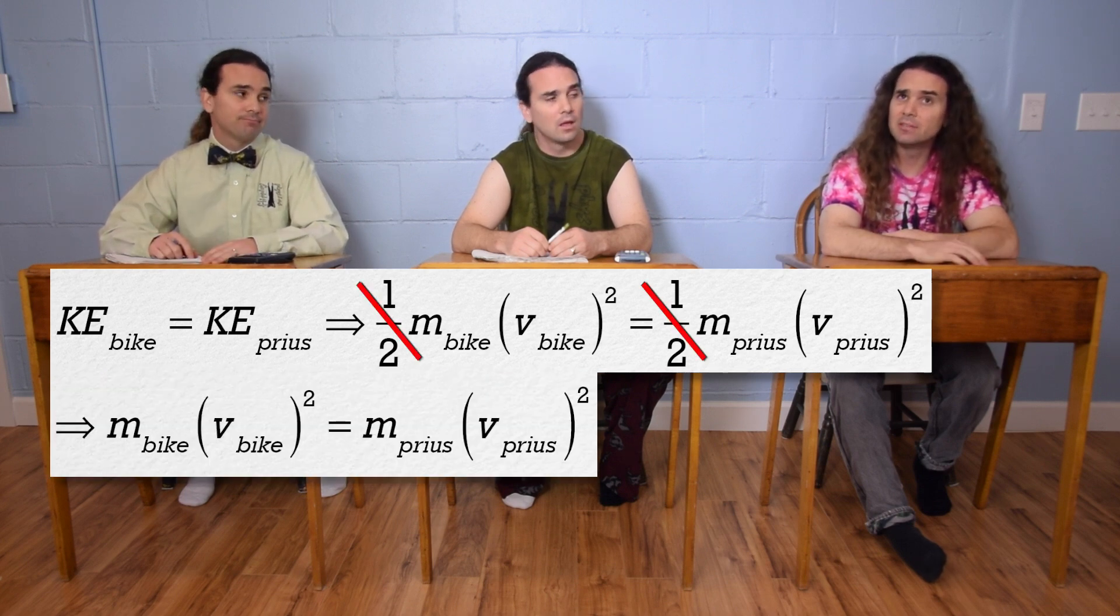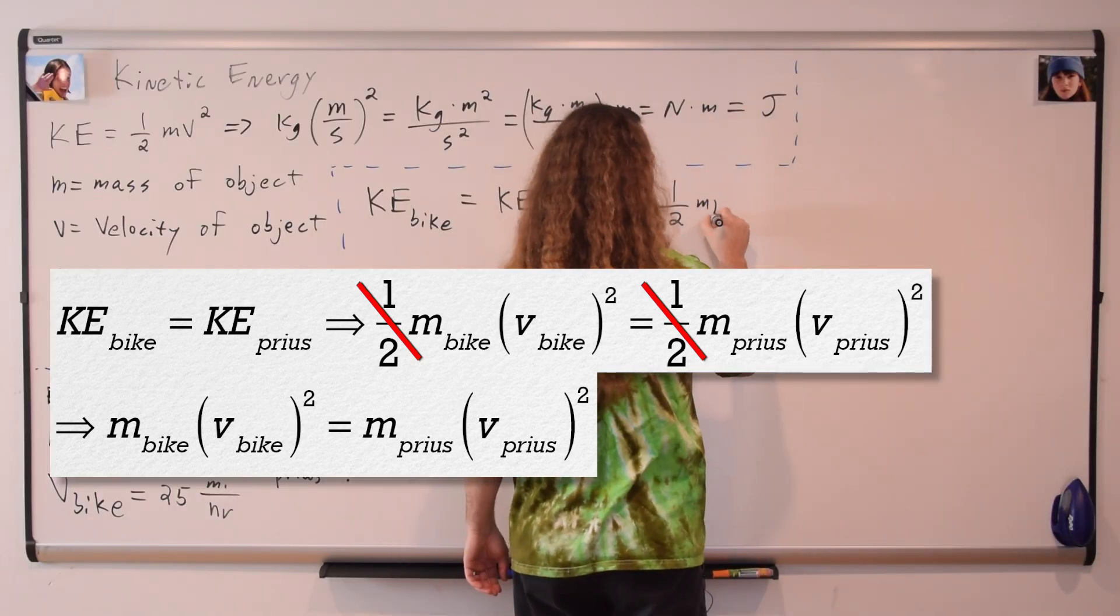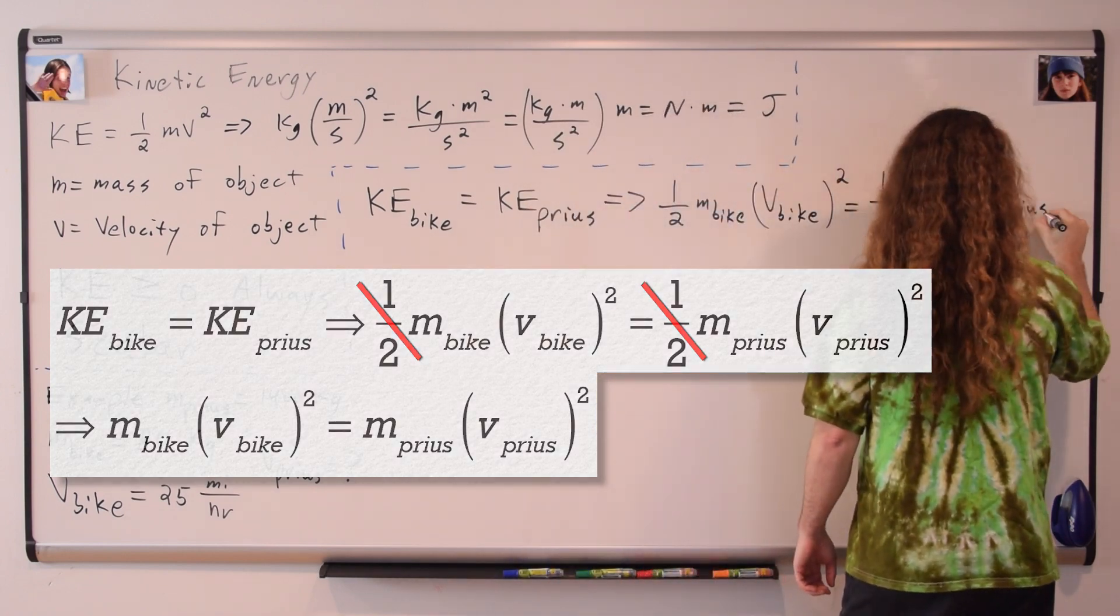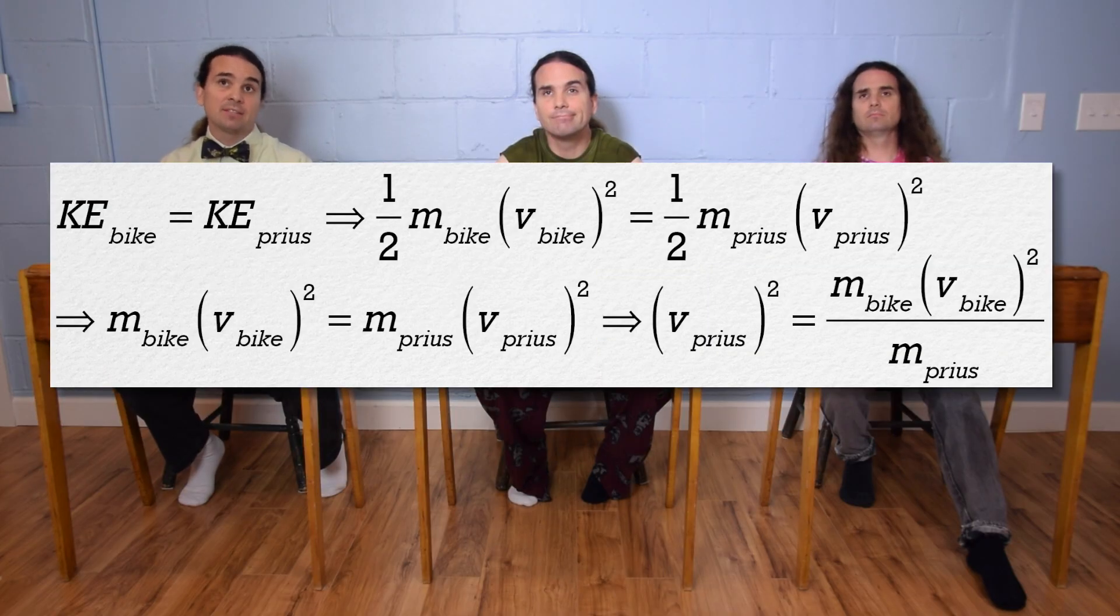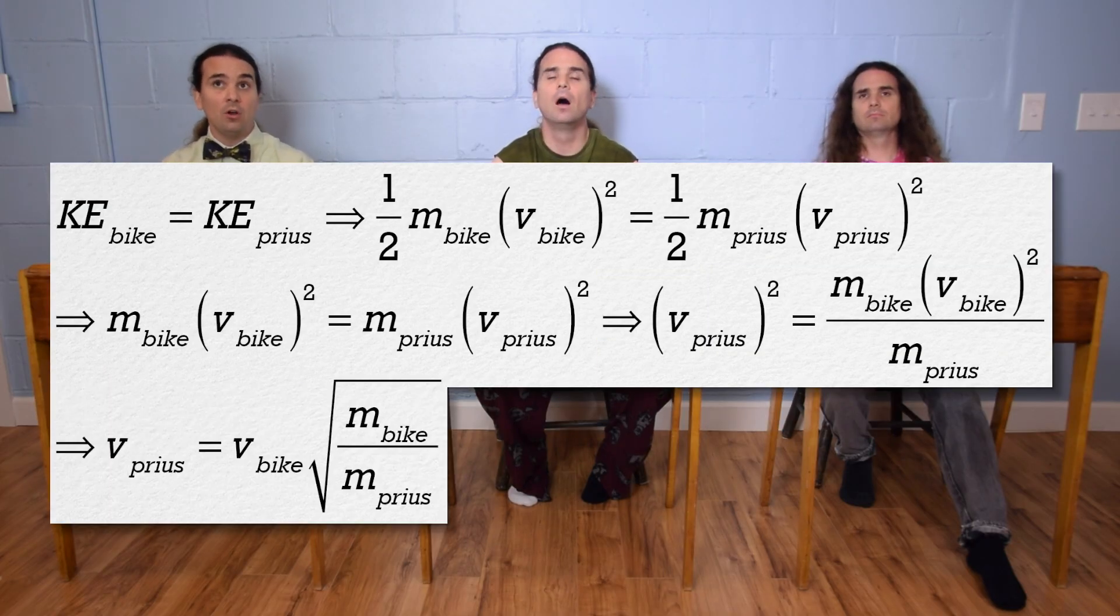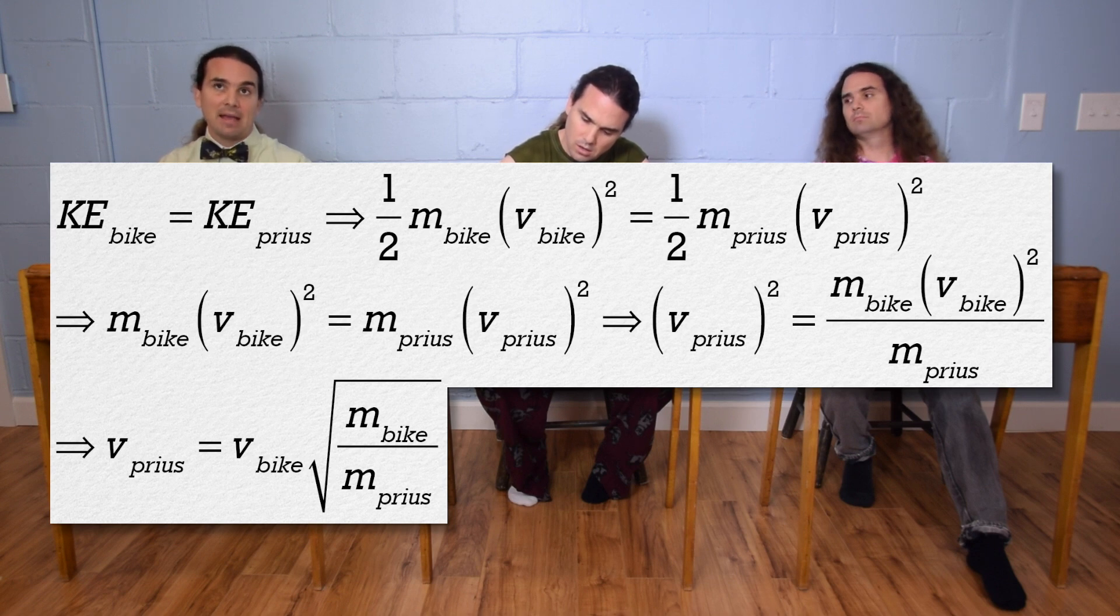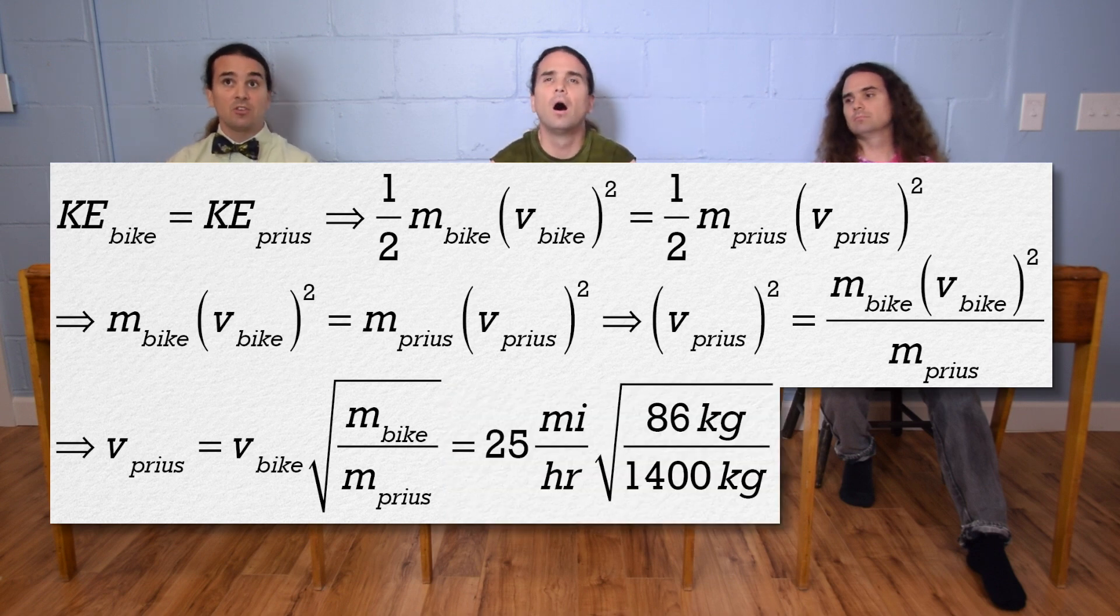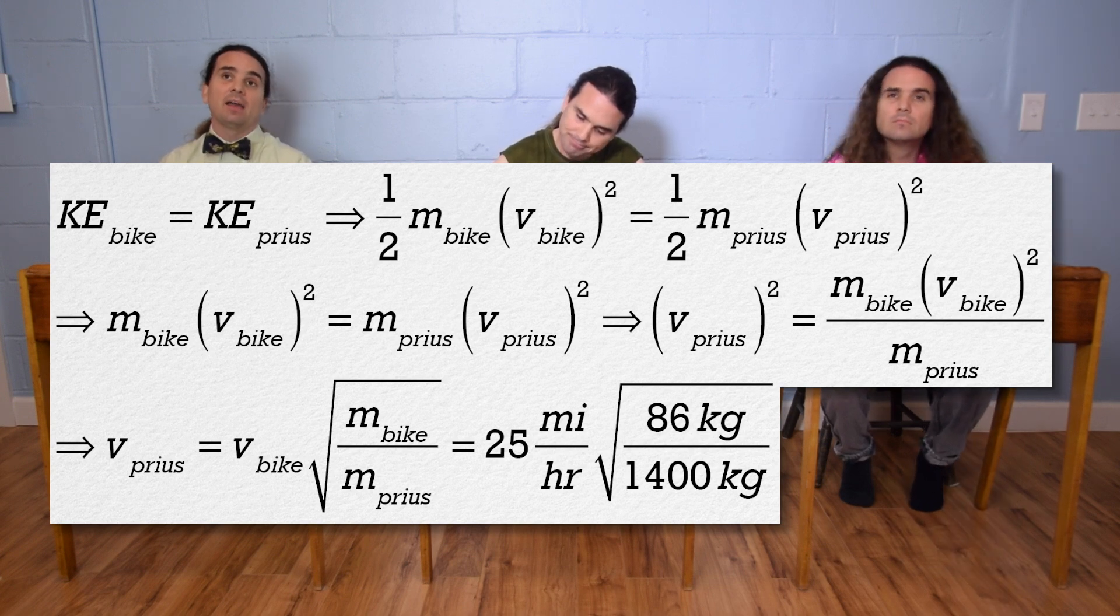That's not as fun. Nope, no. Billy, please finish. Divide both sides by the mass of the Prius and then take the square root of the whole equation to get the velocity of the Prius equals the velocity of the bike times the square root of the quantity, the mass of the bike divided by the mass of the Prius. Substituting in values gives us 25 miles per hour times the square root of 86 kilograms divided by 1,400 kilograms.